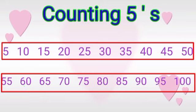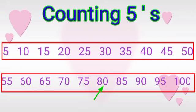Sixty plus five, what will come here? Sixty-five. Sixty-five plus five, what will come here? Seventy. Seventy plus five, what will come here? Seventy-five. Seventy-five plus five, what will come here? Yes, eighty. Eighty plus five, what will come here? Eighty-five. Eighty-five plus five, what will come here, Kuti? Yes, ninety. Ninety plus five, what will come here? Ninety-five.